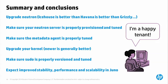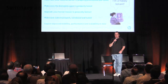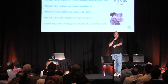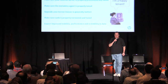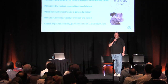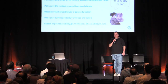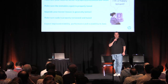Sally's finally happy. Summary and conclusions: upgrade Neutron if you haven't tried it lately — Icehouse is better than Havana is better than Grizzly. The Neutron server is the heart of your deployment; make sure it's properly provisioned and tuned. If you're using metadata, tune the metadata agent. Upgrade your kernel, grab that sudo fix, and there are probably other commands like IP route that you need for namespace deletion. We should see improved stability, performance, and scalability in Juno.